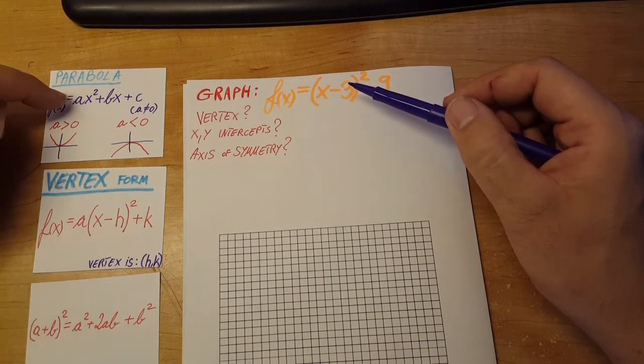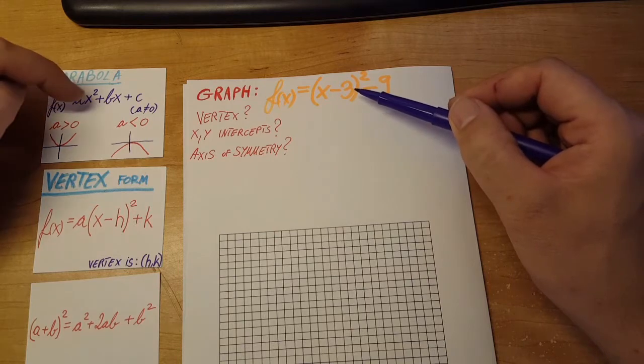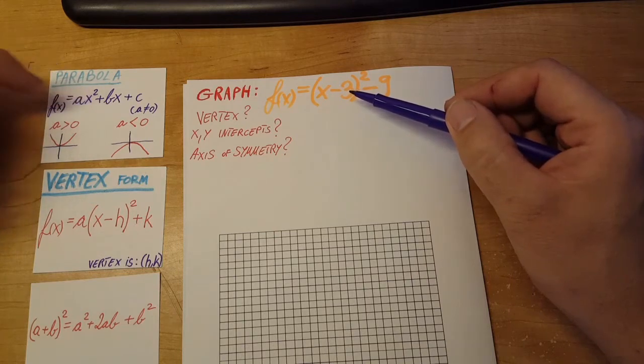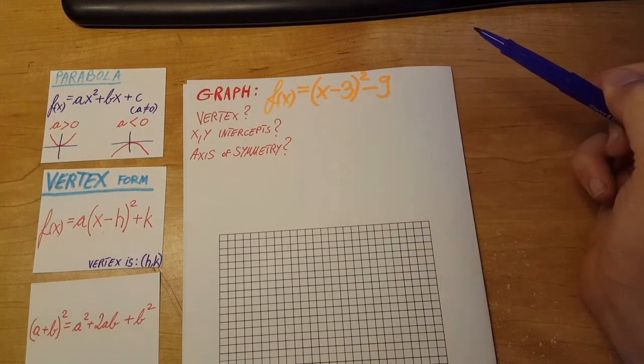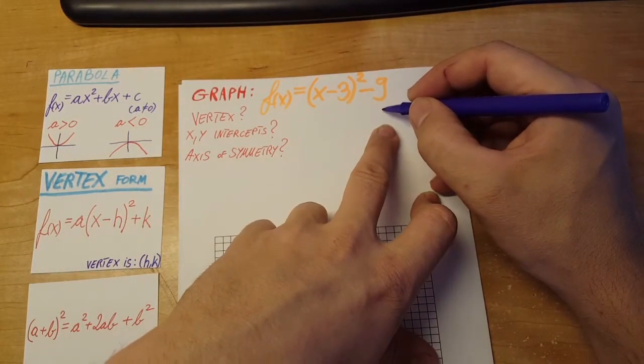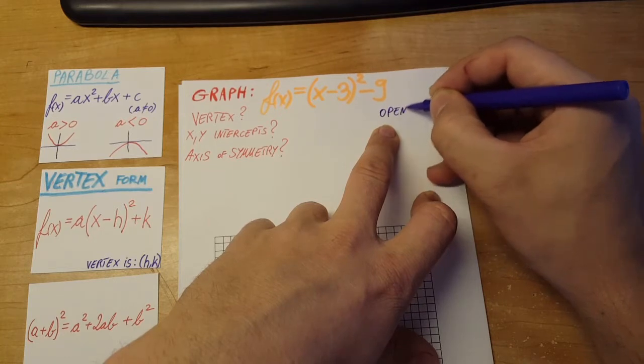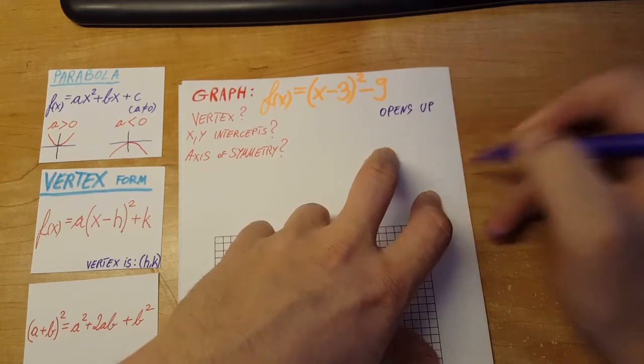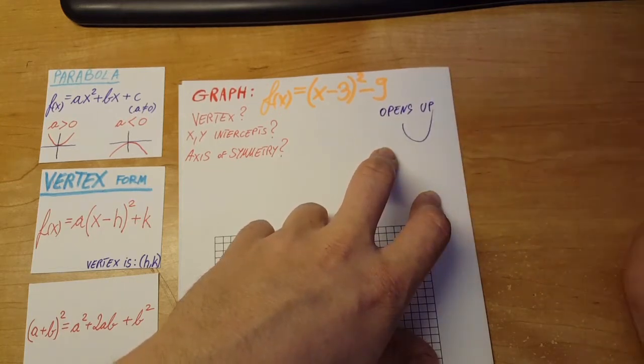And if you'll see, when you're done, that in front of your x squared, you will have a positive 1. So we established our parabola opens upward, so it will look something like this.